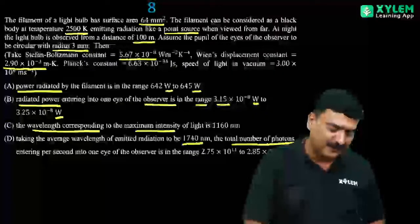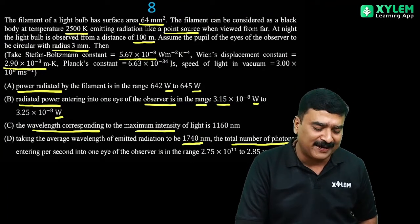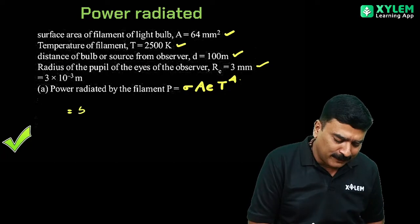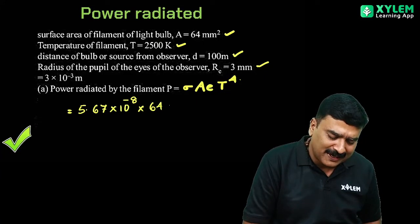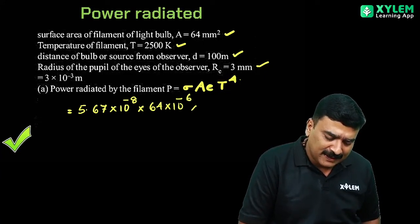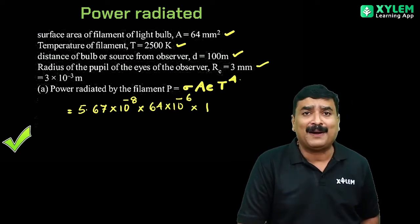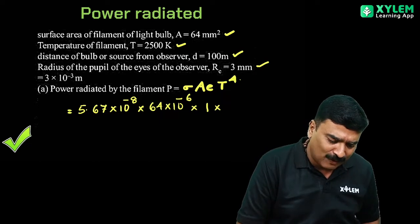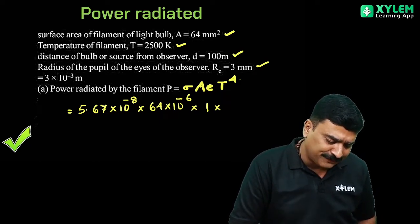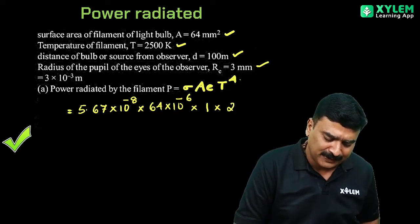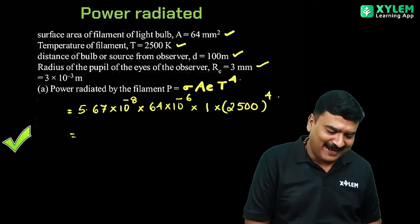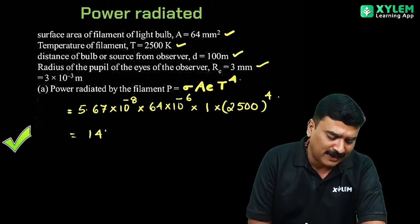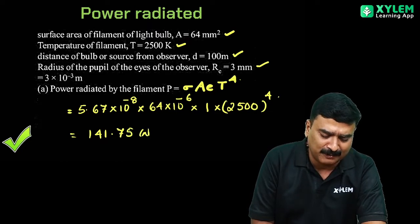If we substitute the values, we'll get the answer. Sigma value is 5.67 × 10^-8 into area 64 × 10^-6 (because it's millimeter square). Then comes emissivity - for a perfect black body, it's 1. Then T raised to 4, which is 2500 raised to 4.